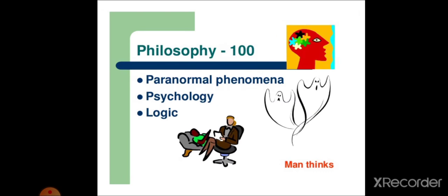What man thinks is arranged in philosophy, 100. Paranormal phenomena, psychology, logic, etc. all comes under this category.